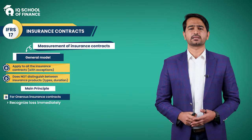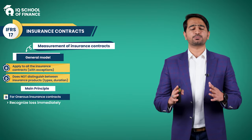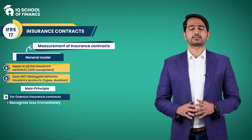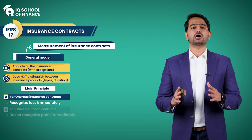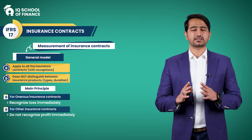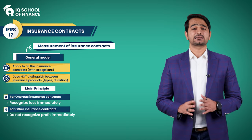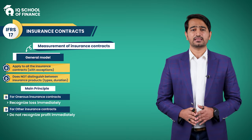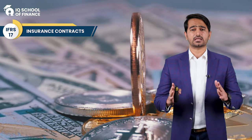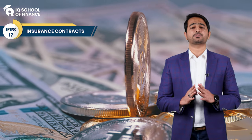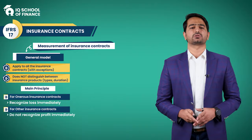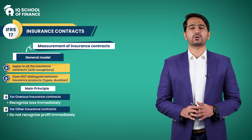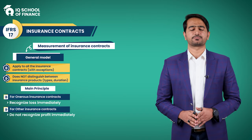On the other hand, for insurance contracts that are profit-making or at least not loss-making, IFRS 17 does not allow immediate recognition of profit. Instead, such contracts must initially be recognized at zero profit, and any profit that arises over time as the contract is performed is recognized gradually. This deferred profit is referred to as the contractual service margin.